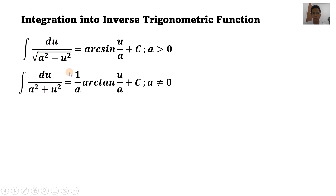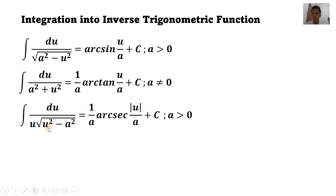So mayroon tayong pattern sa ating mga formula. Kapag yung constant a ay nakasubtract sa may variable na expression, that is arcsin. Kapag naka-add and the expression is in terms of a squared plus u squared, that is arctan. Now, if yung constant yung nakasubtract doon sa may variable expressed in terms of square root of u squared minus a squared, times u in the denominator, that is (1/a) arcsec of the absolute value of u/a plus C, where a is greater than zero. Just like what we're doing before, we are going to solve this using u-substitution or the substitution process.